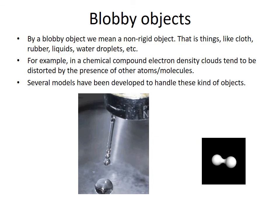One more example of implicit objects is a blobby object. It rather describes not a solid but non-rigid object. That is things like cloth, rubber, liquids, water droplets, etc.